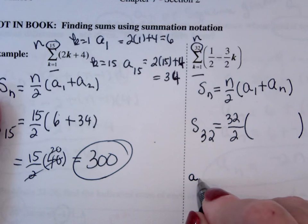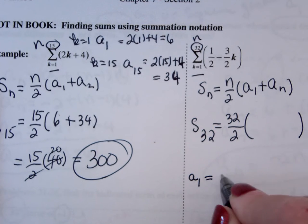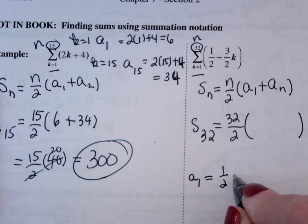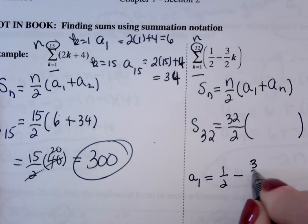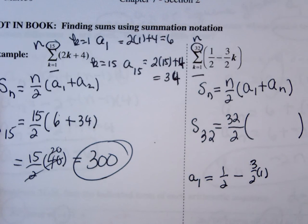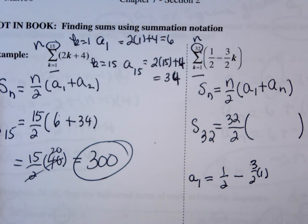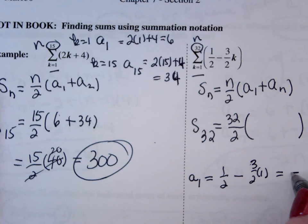Well, a sub 1 is 1 half minus 3 halves times 1, which is 1 half minus 3 halves, which is minus 2 halves or minus 1.